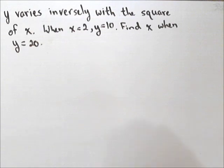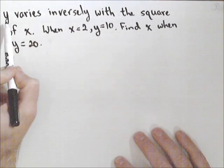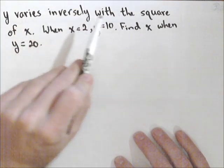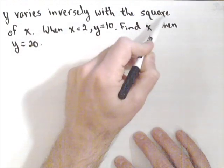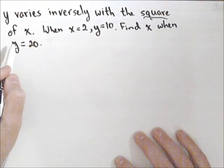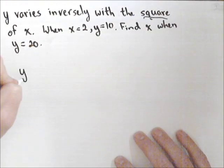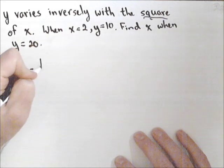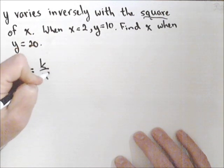In this video we're gonna deal with inverse variation. So when we're told y varies inversely with the square, so we do want to pay attention to that there, of x, we can set up a relationship: y equals k over x squared.